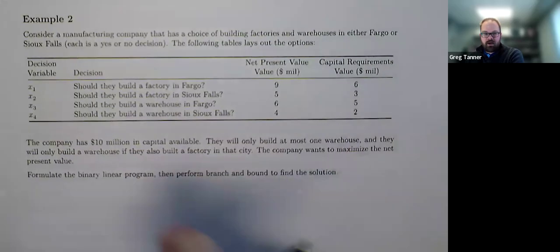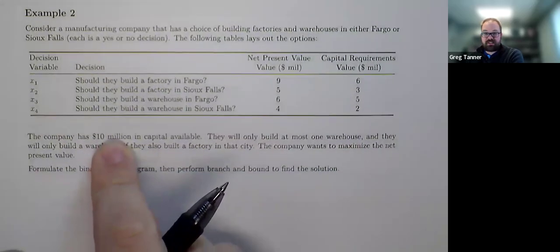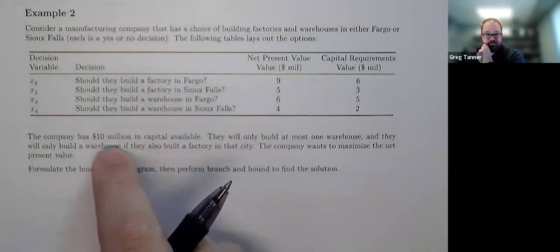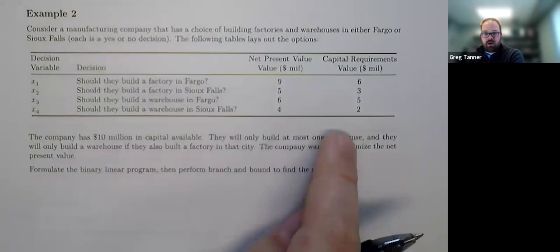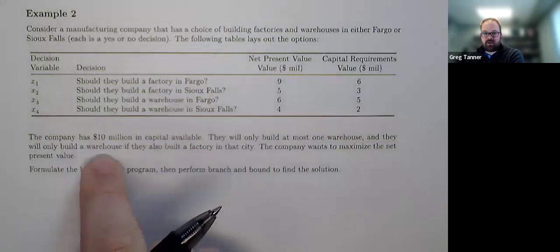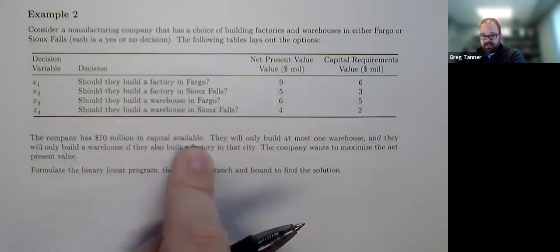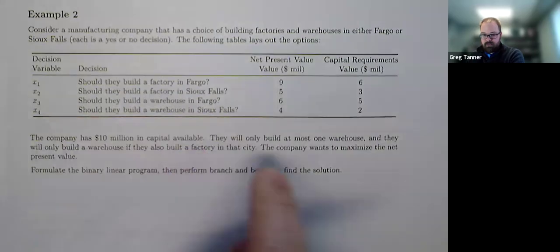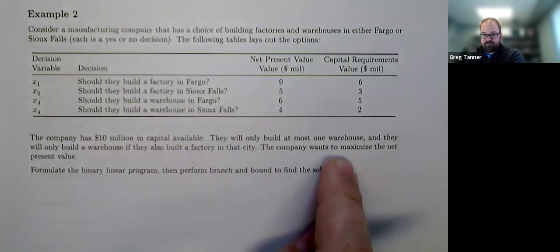Okay, the company has 10 million in capital available to spend on these investments. What's the best combination of investments for them? They will only build at most one warehouse and they will only build a warehouse if they also build a factory in that city. And they want to maximize that net present value.